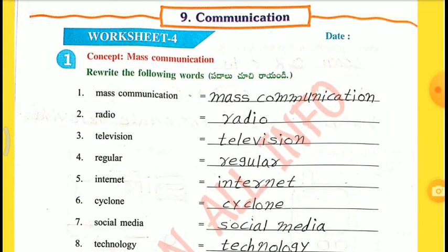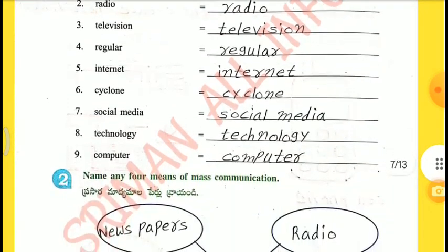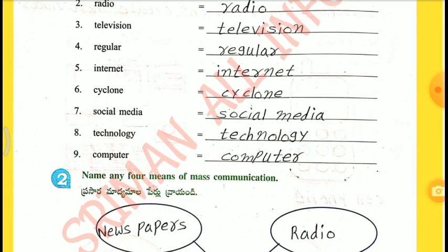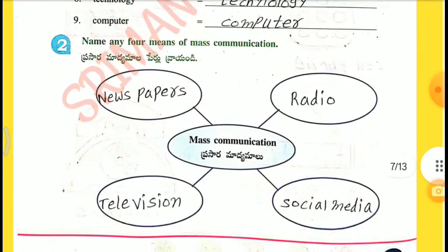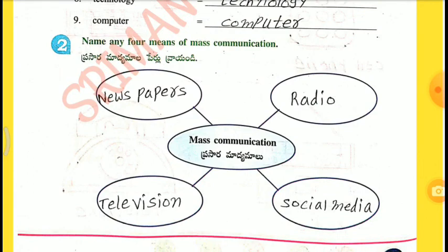Worksheet number four, Concept: Mass Communication. Rewrite the following words: mass communication, radio, television, regular, internet, cyclone, social media, technology, computer. 2nd one — Name any four means of mass communication: newspapers, radio, social media, television.